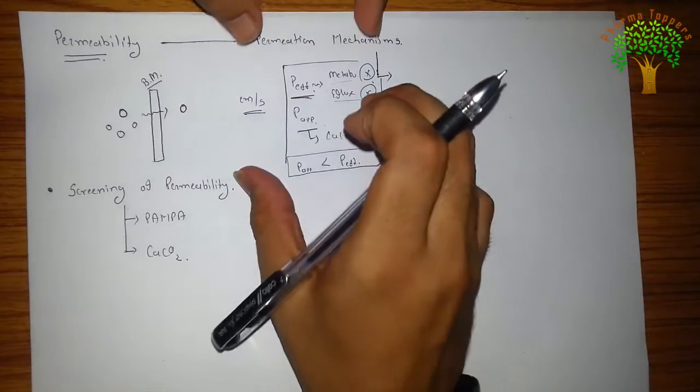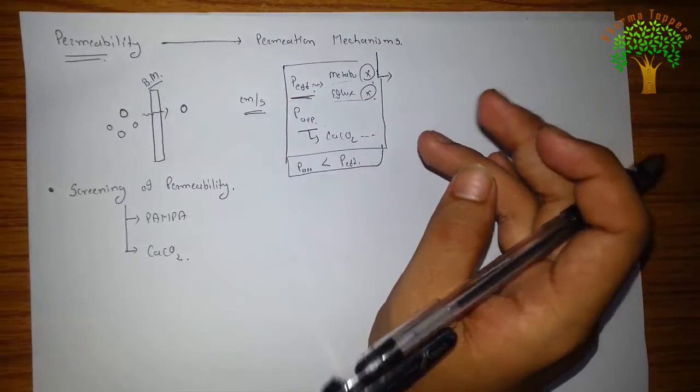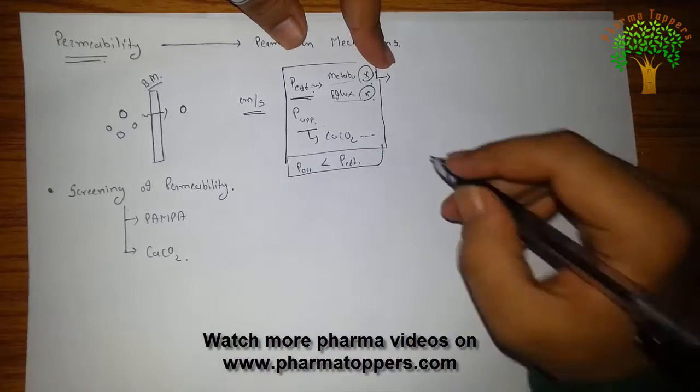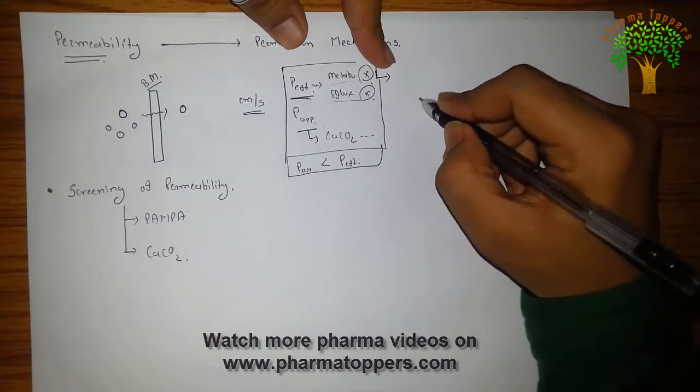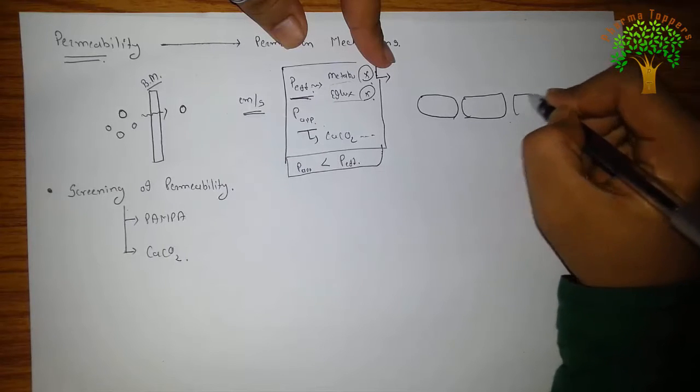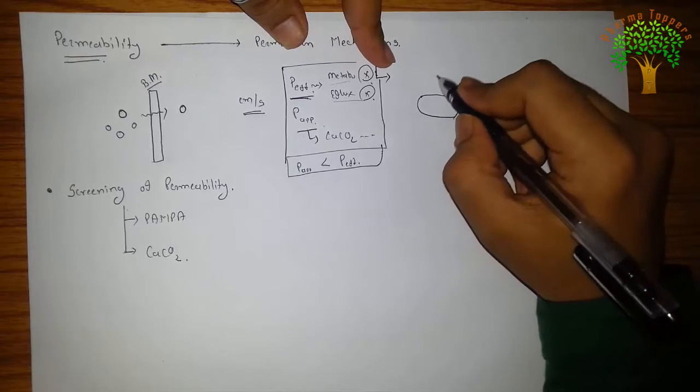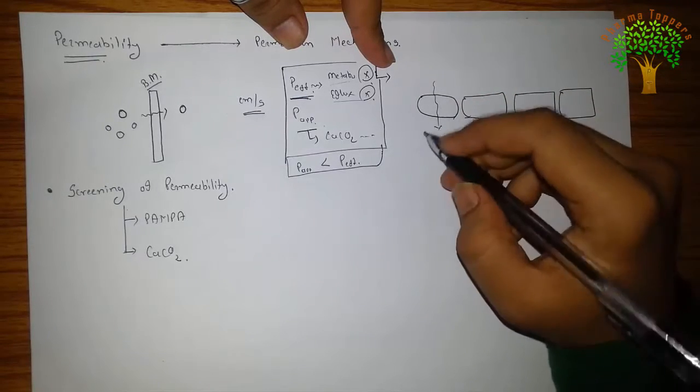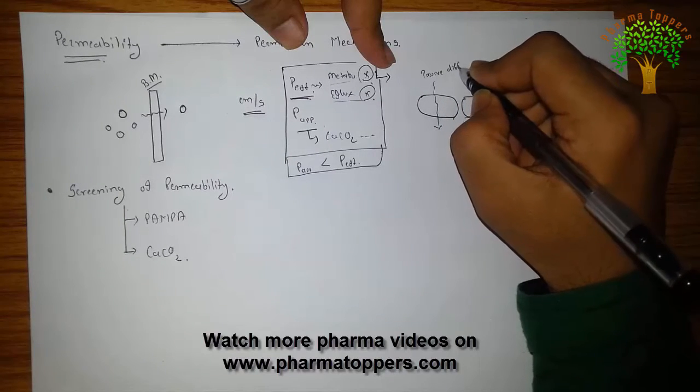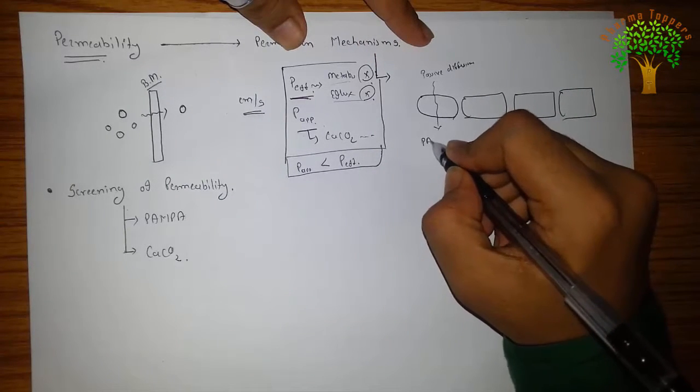So these are the permeability definitions and the types of permeability which we can measure. Now the permeability mechanisms which are there, including the transport from the bar. Suppose this one is the cell, this is the layer of cells: one, two, three, and four cells are there. If my molecule passes from here, it can be the passive diffusion, the transcellular transport which we can measure by means of PAMPA.